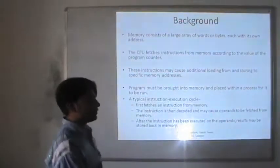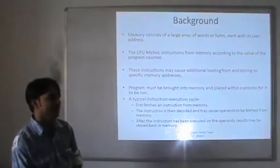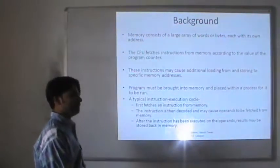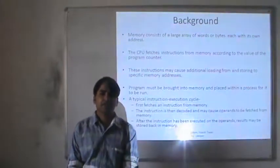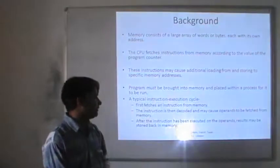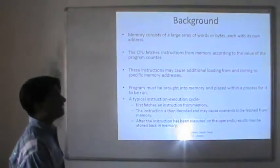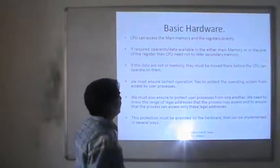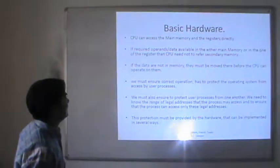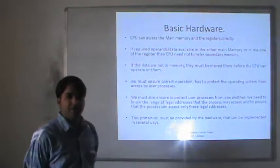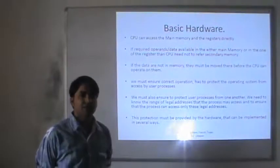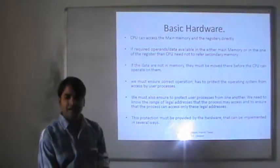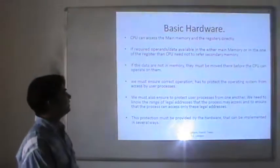During the execution of any program, many times we need to fetch memory locations. At the same time, after computation, we need to store the result back to memory. For this purpose, we need memory management concepts. The basic hardware for memory management: the CPU can access the main memory — RAM, the random access memory — directly. During execution, the CPU can access RAM and all CPU registers directly.